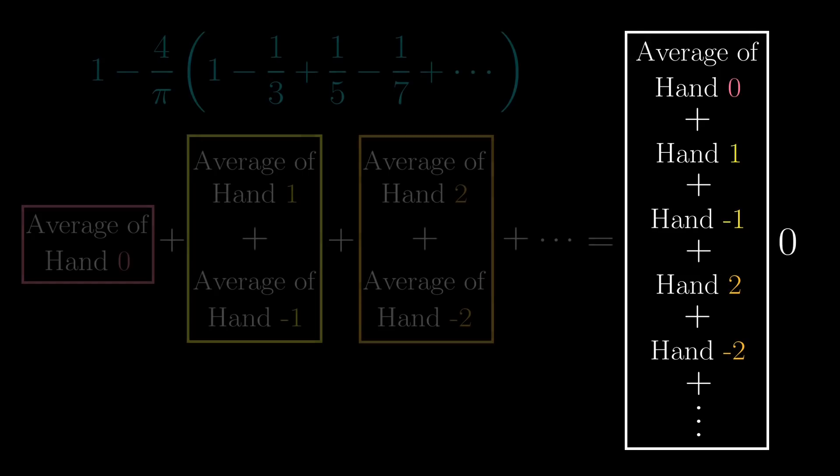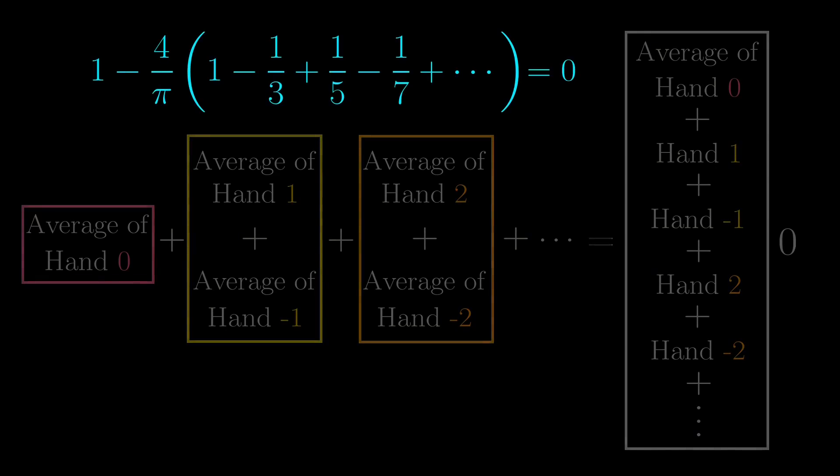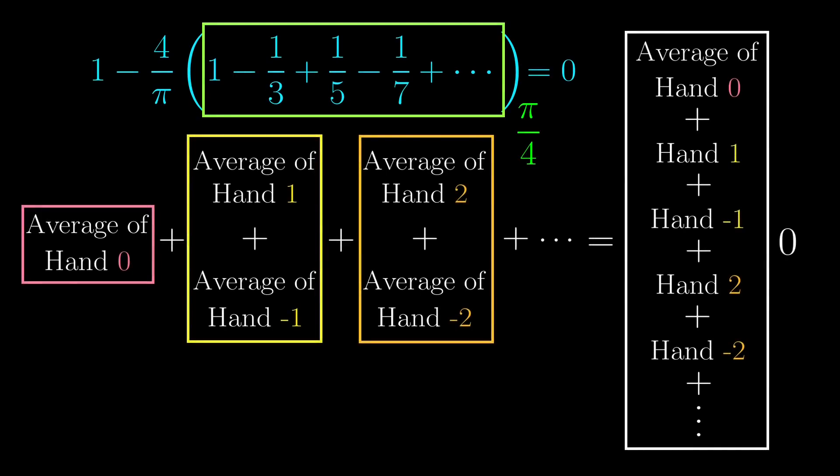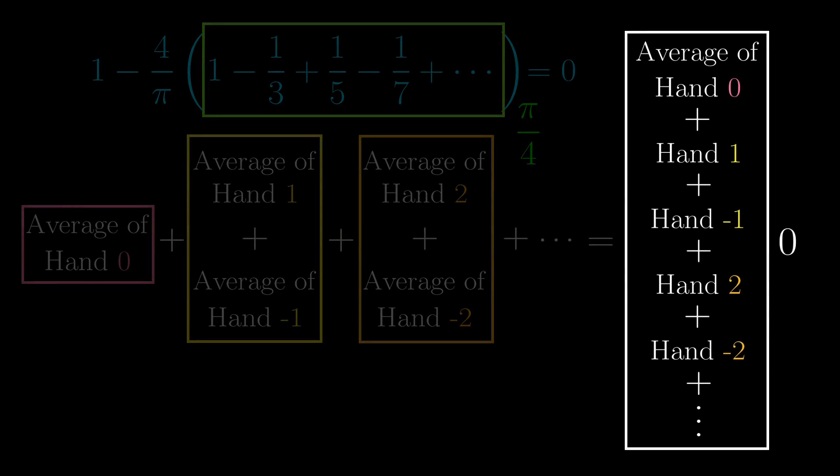So finally, we see that this series needs to equal to 0, which implies that this series has to be pi over 4. This proof, I think, is arguably the simplest because it doesn't require any knowledge of calculus or number theory. But we cheated a bit here, especially when it comes to the right side of the equation.